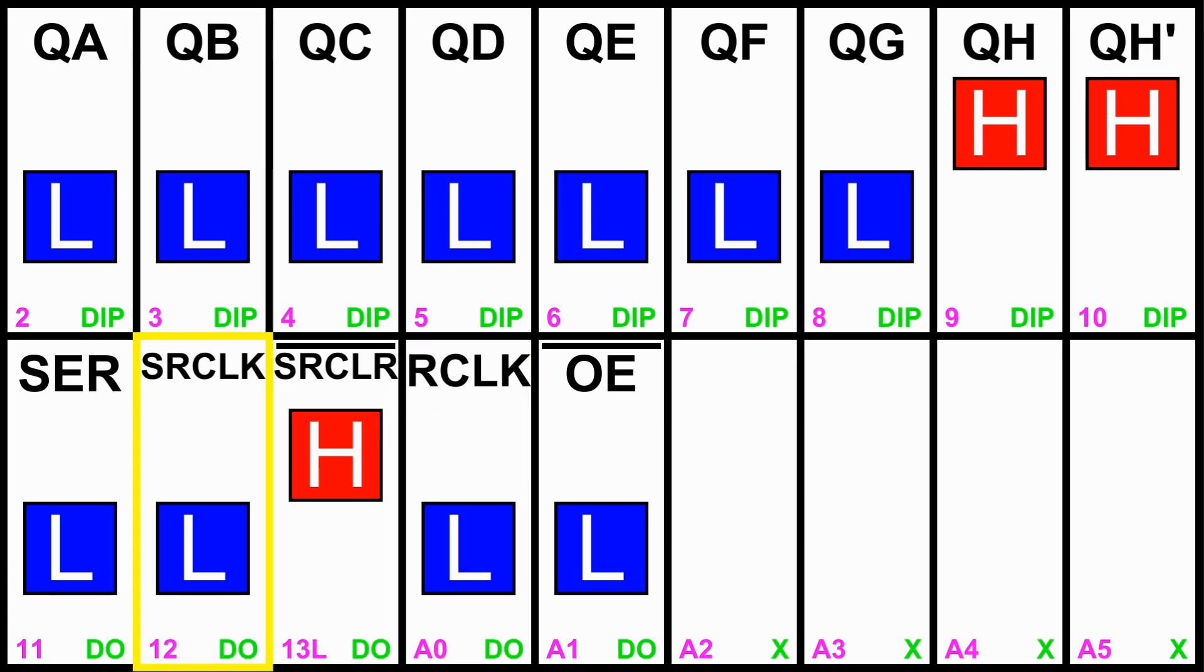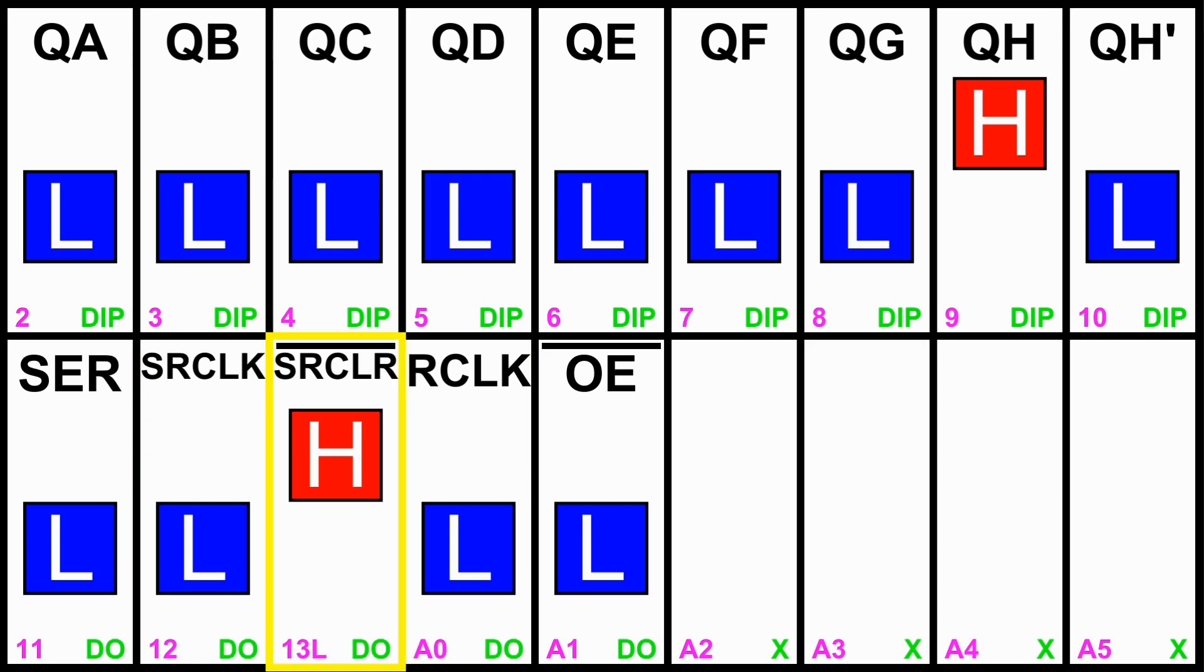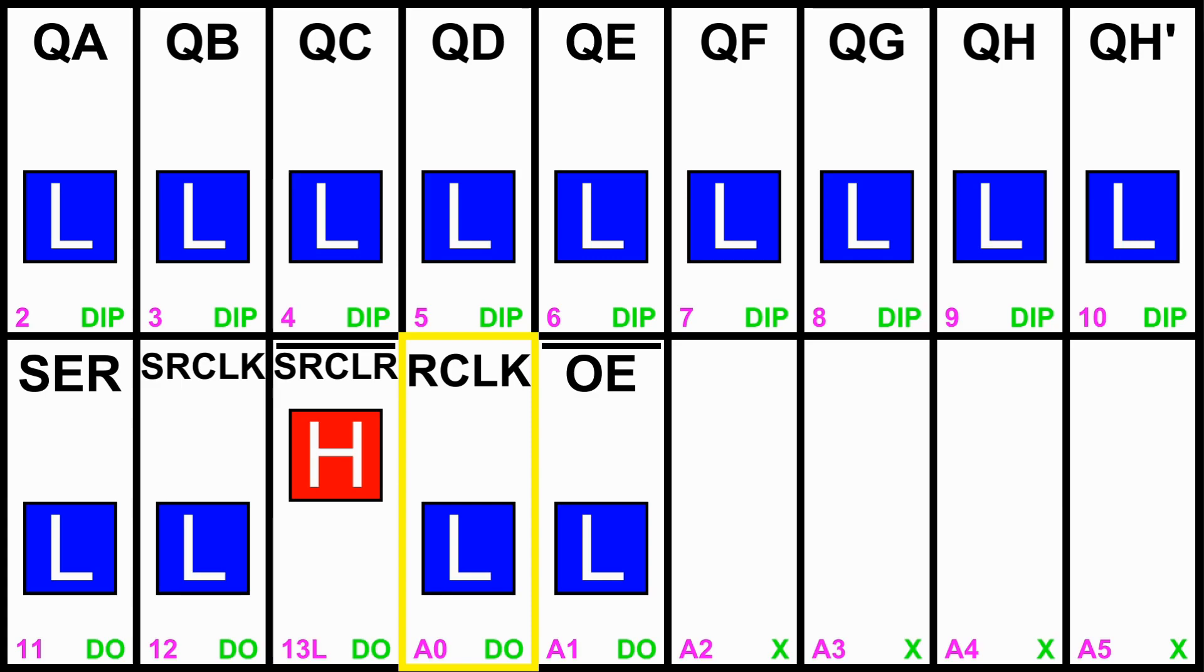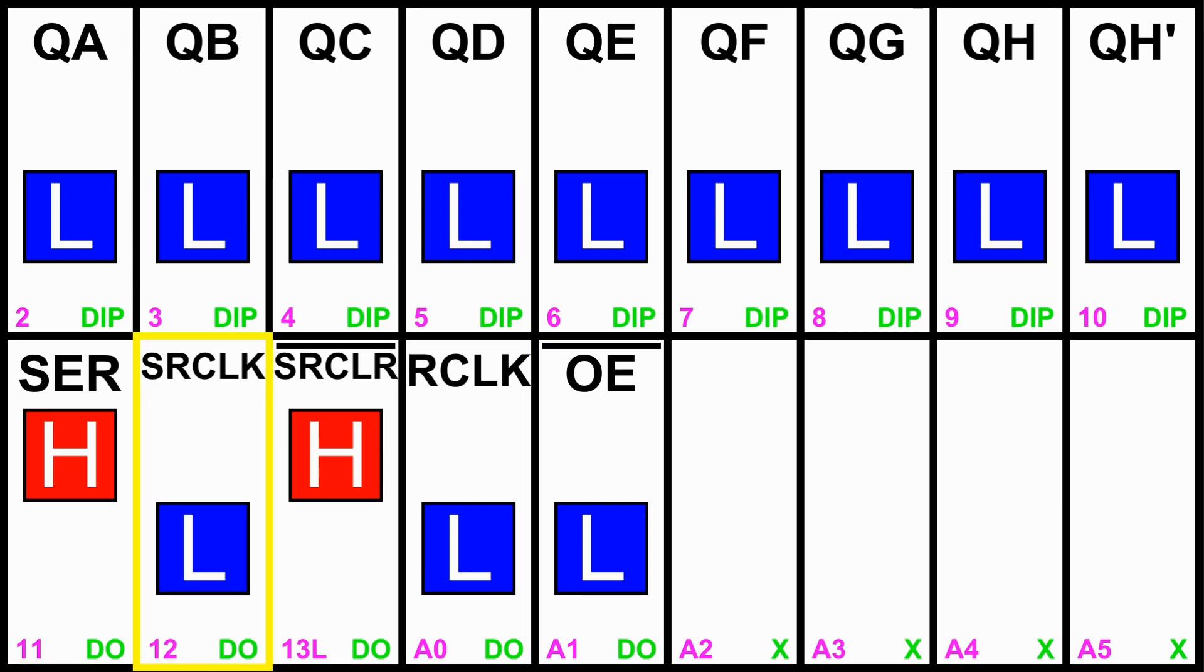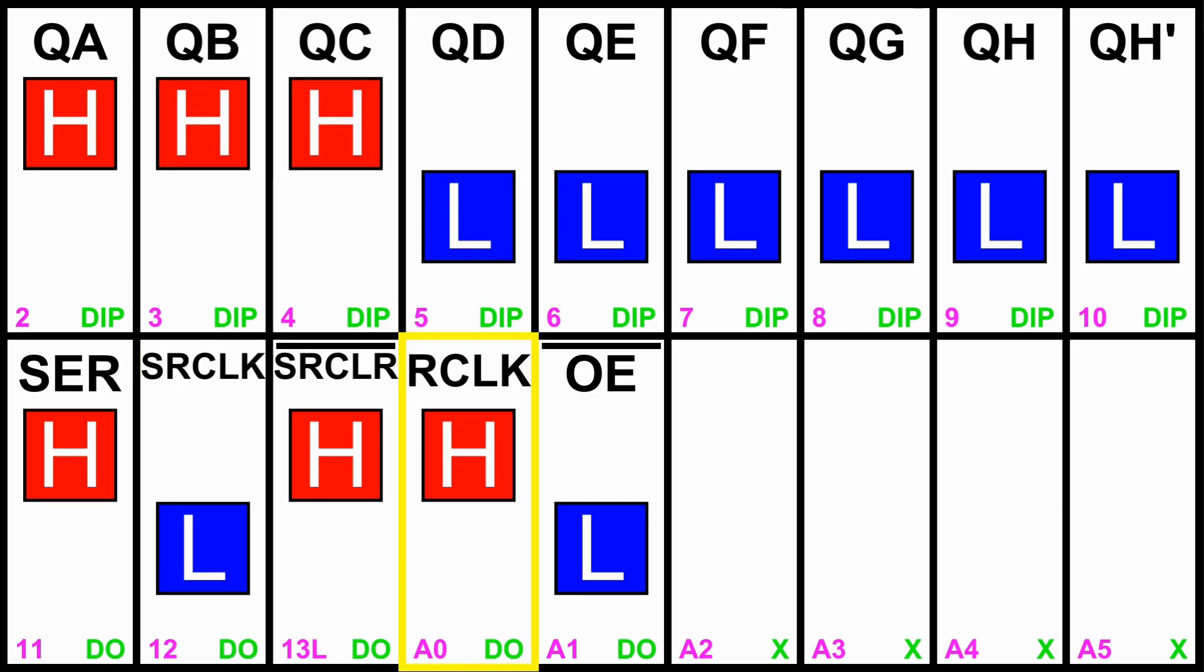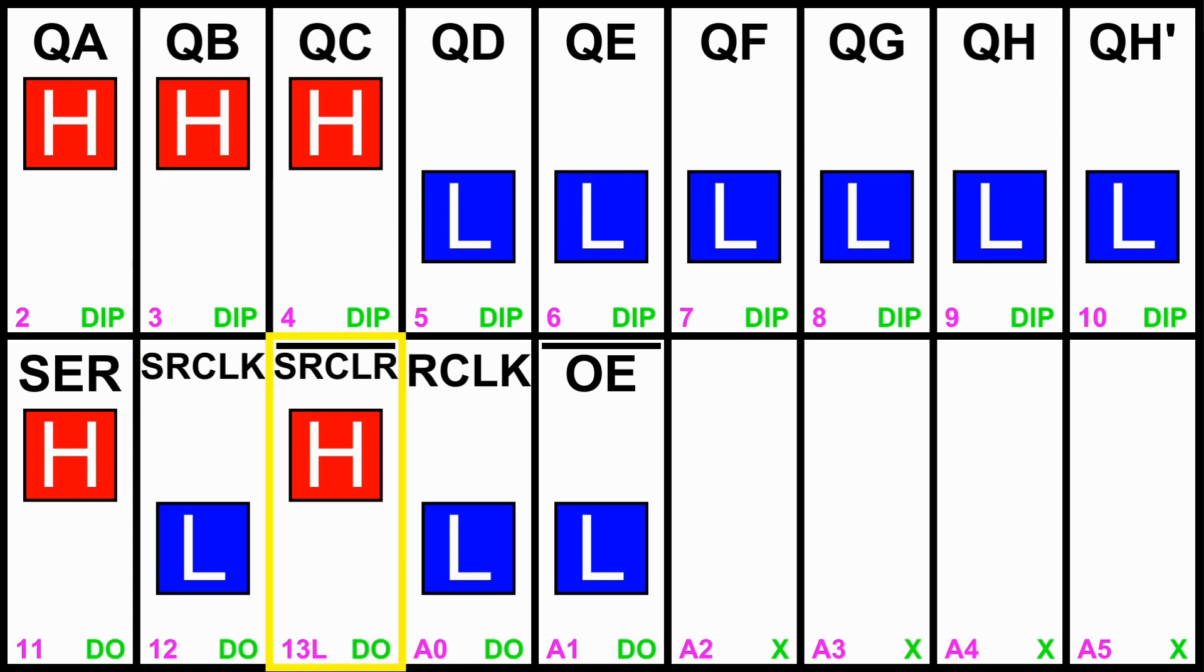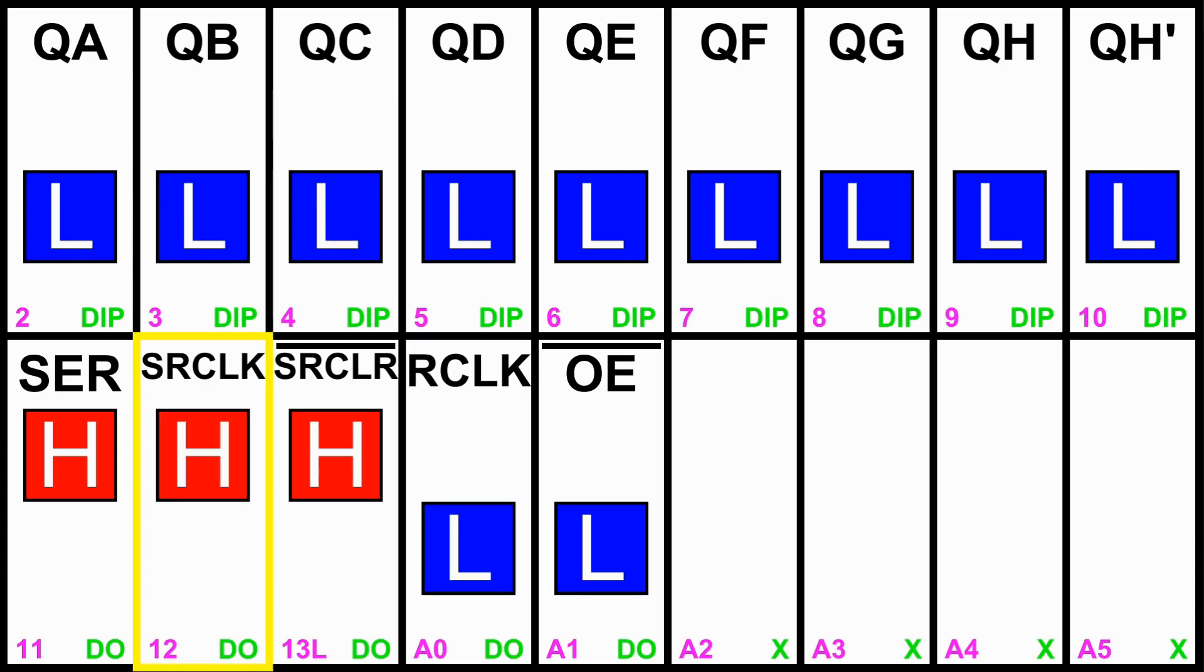So if I pulse it to update, you can see it's on QH, shifted again. Now the register is completely clear, but it hasn't shown yet until I update the R clock. So let me go ahead and shift in three highs and I can update and we see there's the three highs and then serial clear. And that has cleared it. But of course the data hasn't updated until I do that. Let me shift in again.